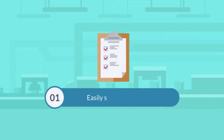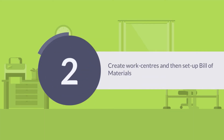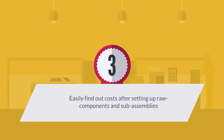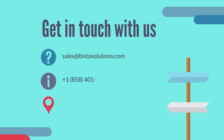So setting up products, I can set them up starting from the bottom up. I can set my bill of materials by first creating my work centers and then building up to my operations. I can find out the cost if I've set up my raw components and my sub assemblies first. And I can use price lists to guarantee margins so that I'm never selling a product below the margins that my business requires. I hope that was useful. If you want to talk about setting up your manufacturing in Odoo, please reach out to Vista Solutions and I'll see you guys next time.